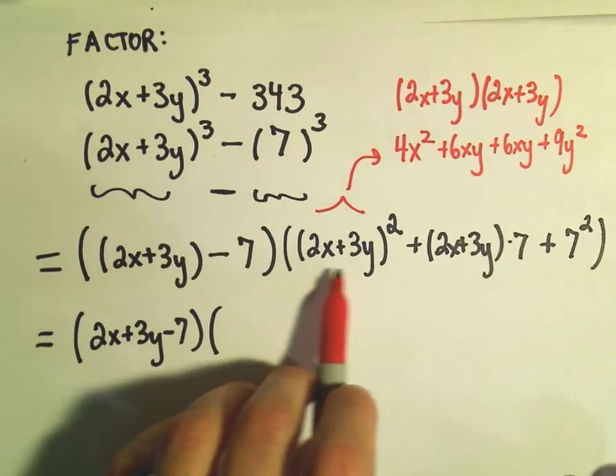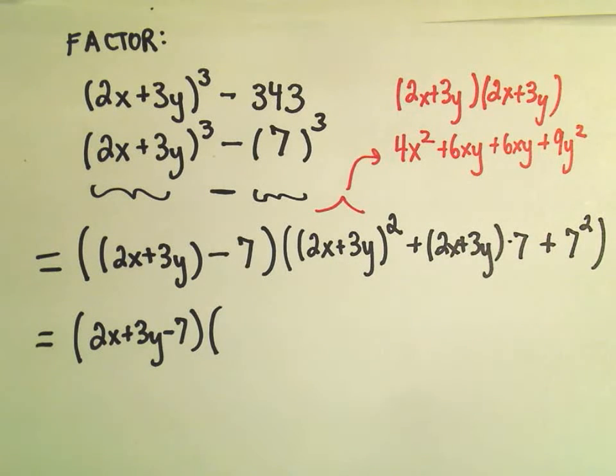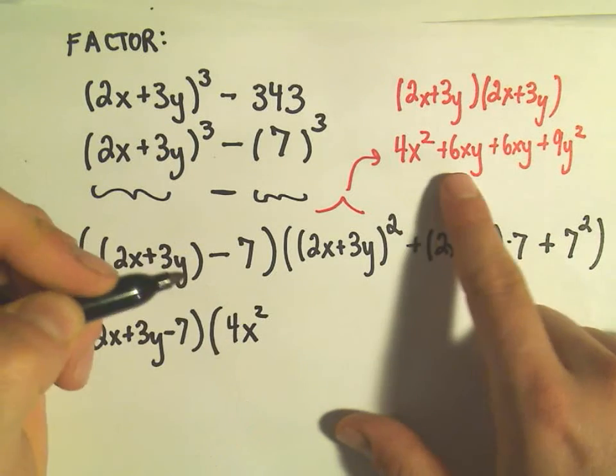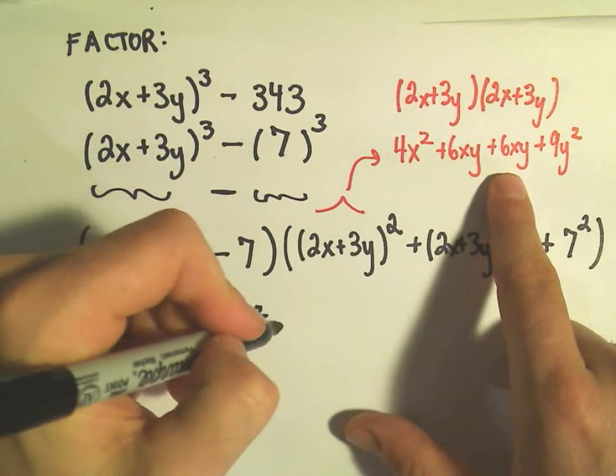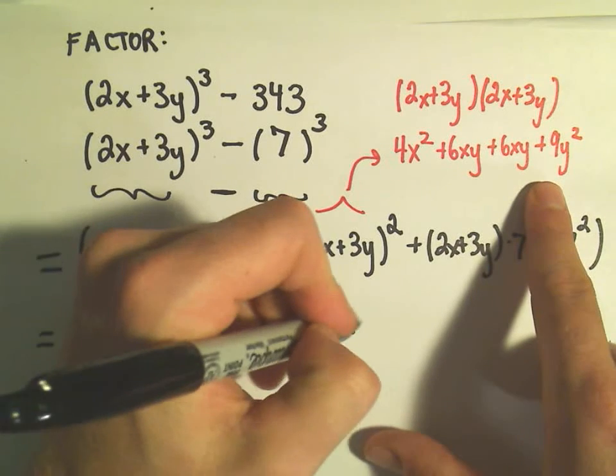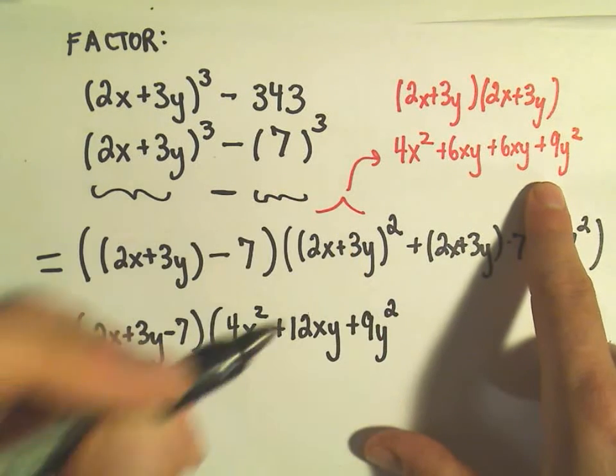The 2x plus 3y squared multiplied out. I think we could even collect some like terms. We've got 4x squared. We've got positive 6xy and positive 6xy, so that would give us a positive 12xy. We've got our plus 9y squared.